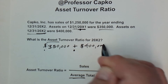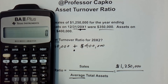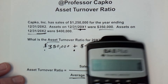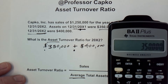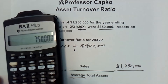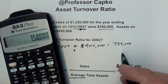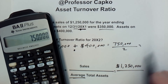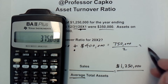I'm going to pull out the calculator. We have $350,000 and add $400,000, which gives us a total of $750,000. But we're not going to stop there — we're going to divide that by 2. $750,000 divided by 2 gives us $375,000 as the average total assets.